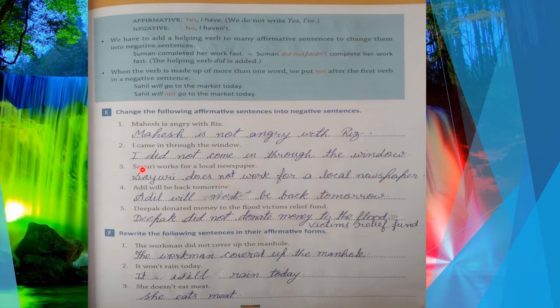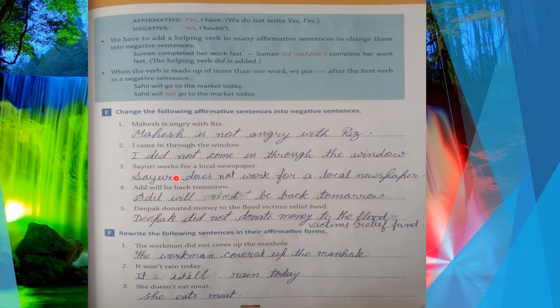'Works' means simple present tense, and since Sayuri is singular we use 'does'. If it were a plural subject like 'Sayuri and Ria' or 'we work', we would use 'do'. Since it's singular, we use 'does': 'Sayuri does not work for a local newspaper.'